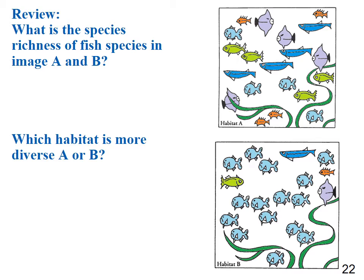Practice: which habitat is more diverse — A or B? Habitat A has more even distribution, so habitat A is more diverse. Species richness in both A and B: habitat A has orange, light blue, green, dark blue, and purple fish — five species. Habitat B also has light blue, orange, dark blue, purple, and green fish — five species. Same species richness of five, but habitat A is more diverse.